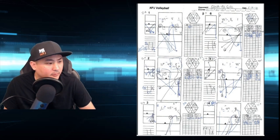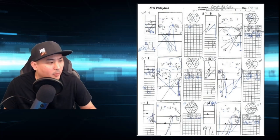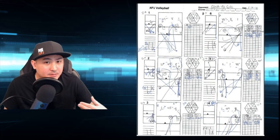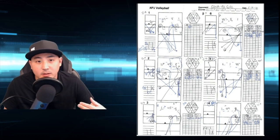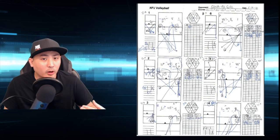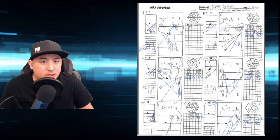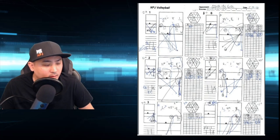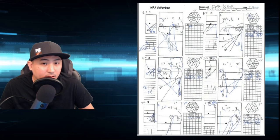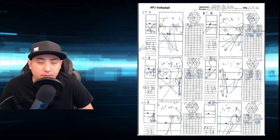Now, in order for this to work and to get the matchups that you want, there needs to be some guesswork involved. You're going to have to take a guess on what rotation your opponent's going to start in. When scouting your opponent, you have to be sure that you circle or identify in some way what rotations your opponent starts in. On my sheet, I circle the rotation they start in and indicate whether they were receiving or serving — I've written the letters REC for receive and SRV for serve.